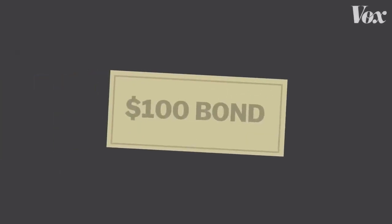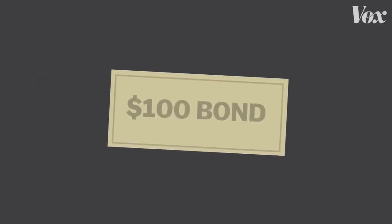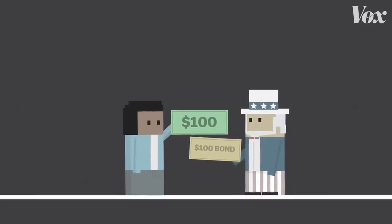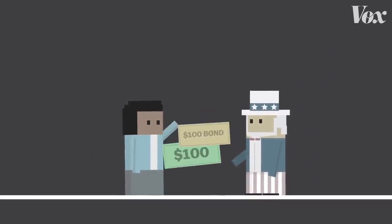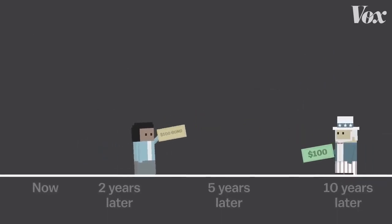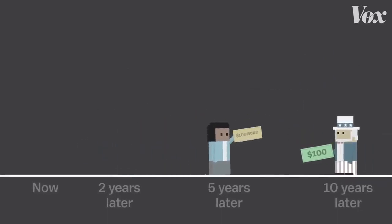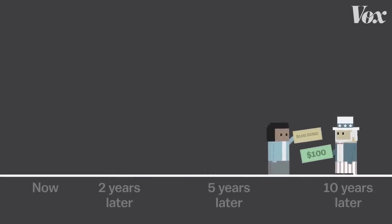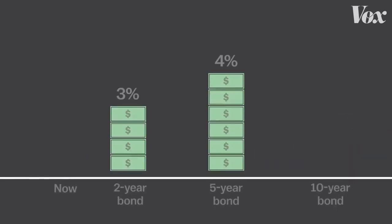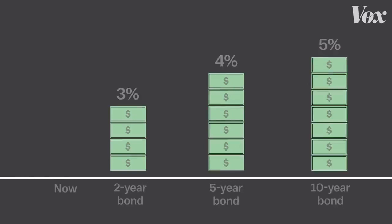It all starts with a U.S. Treasury bond. A bond is basically an agreement saying if you lend the federal government, say, $100, they'll pay you interest while they hold on to your money, until the date they agreed to pay you back. And the longer you let the government keep your money, the higher the interest rate — so you get more money.